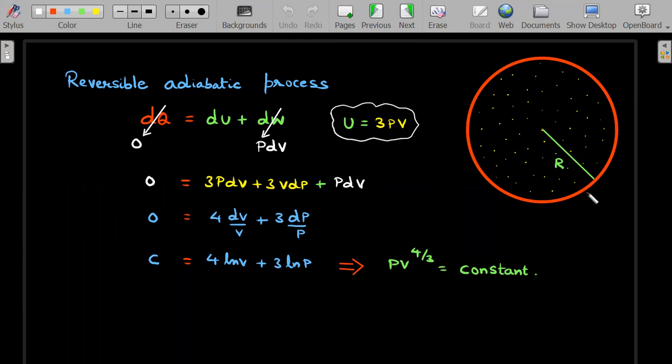For that particular photon gas, if I write the first law: dQ = dU + dW. Not only that, he has also mentioned in the question that U = 3PV, right? He has given pressure as 1/3 U/V, therefore U by V, and therefore I have written it in this format.